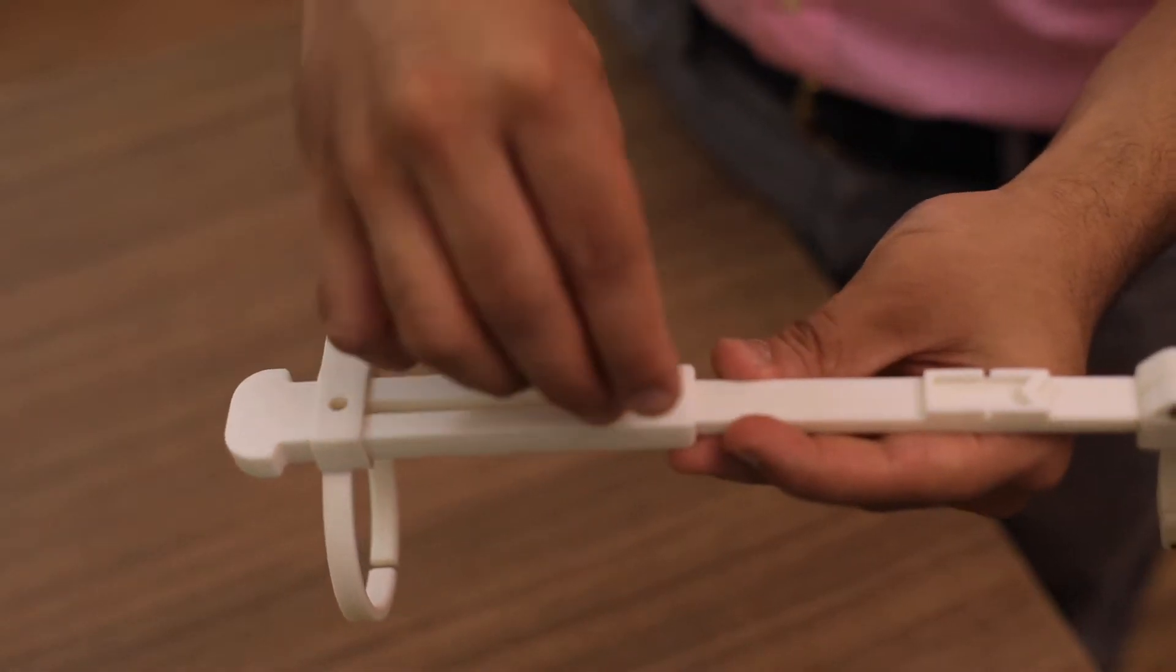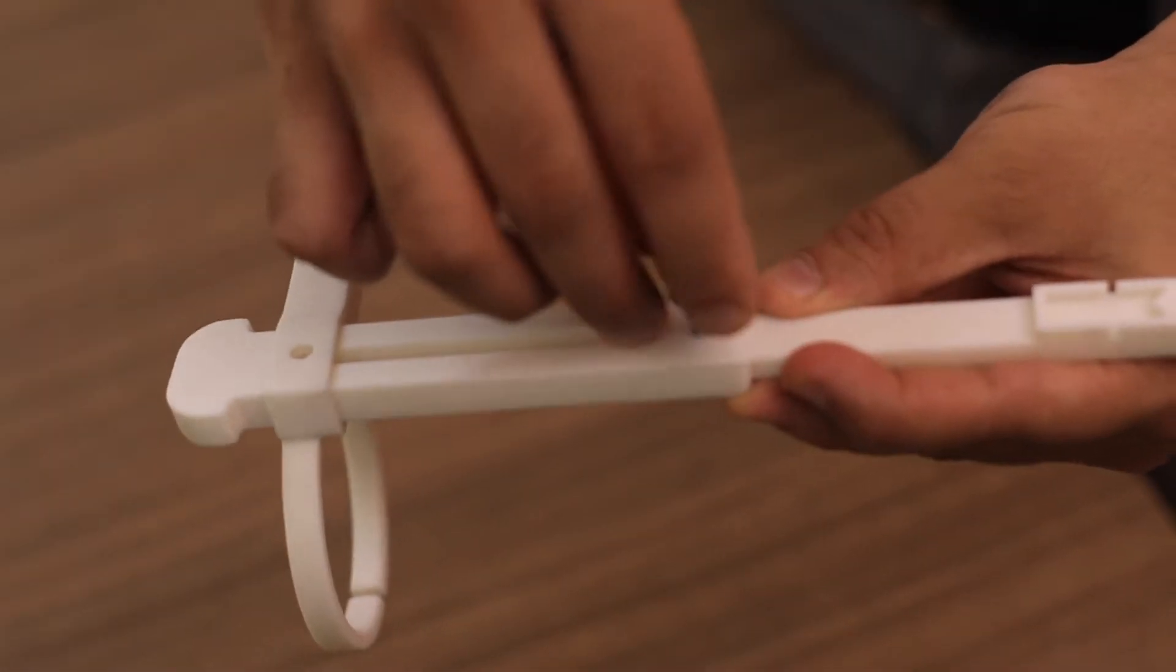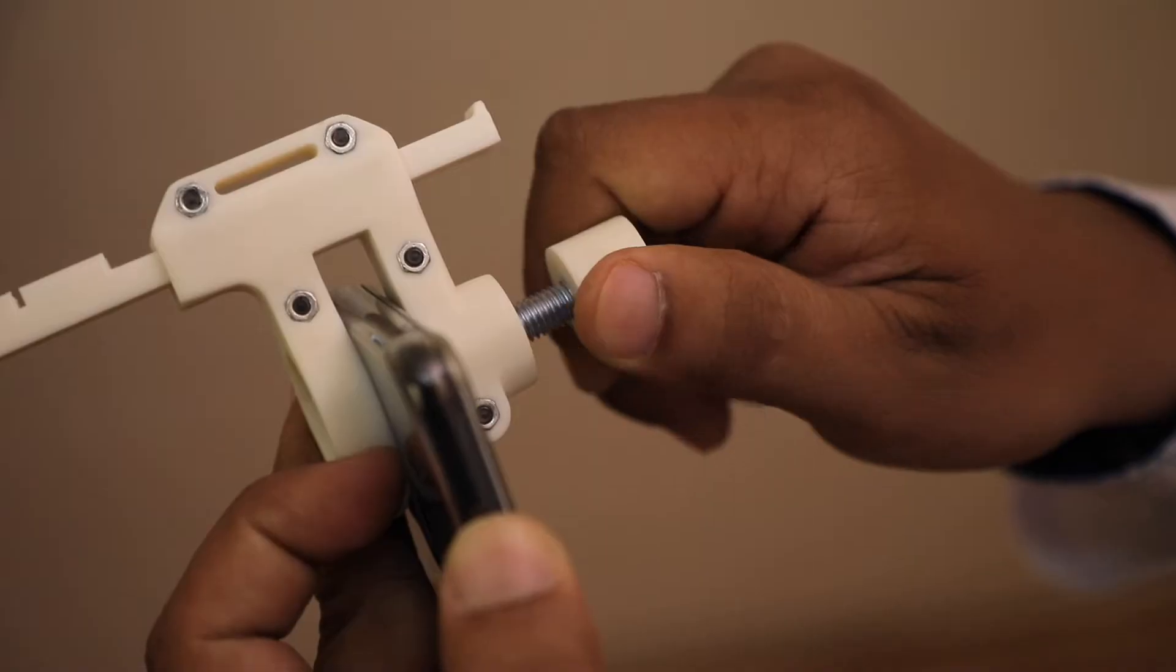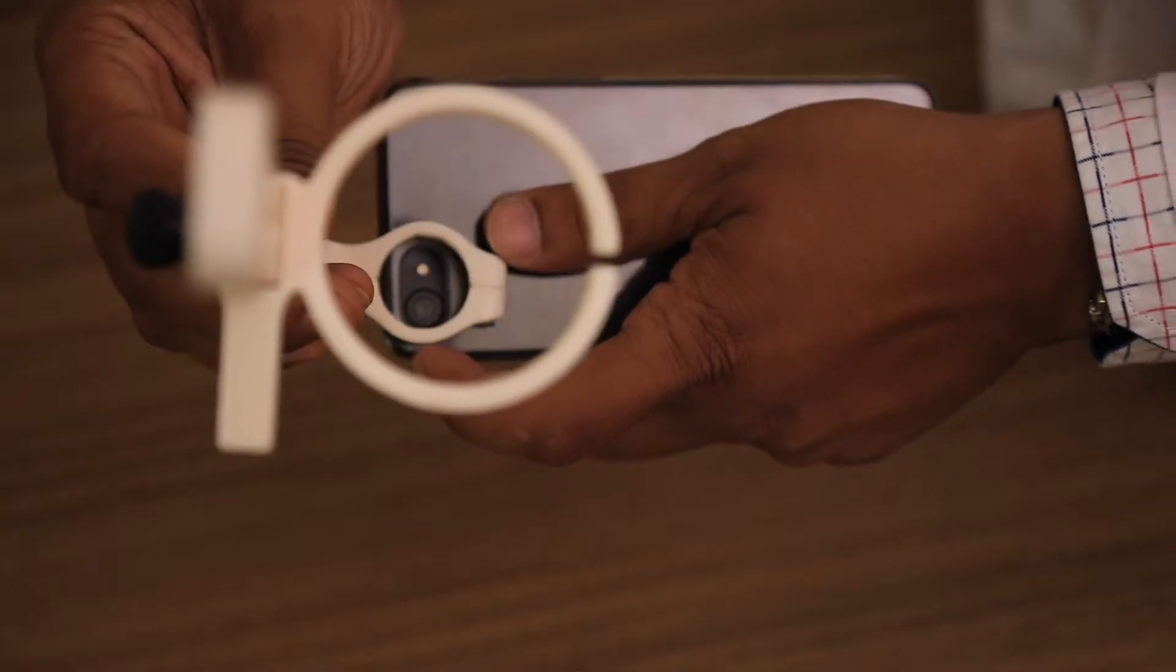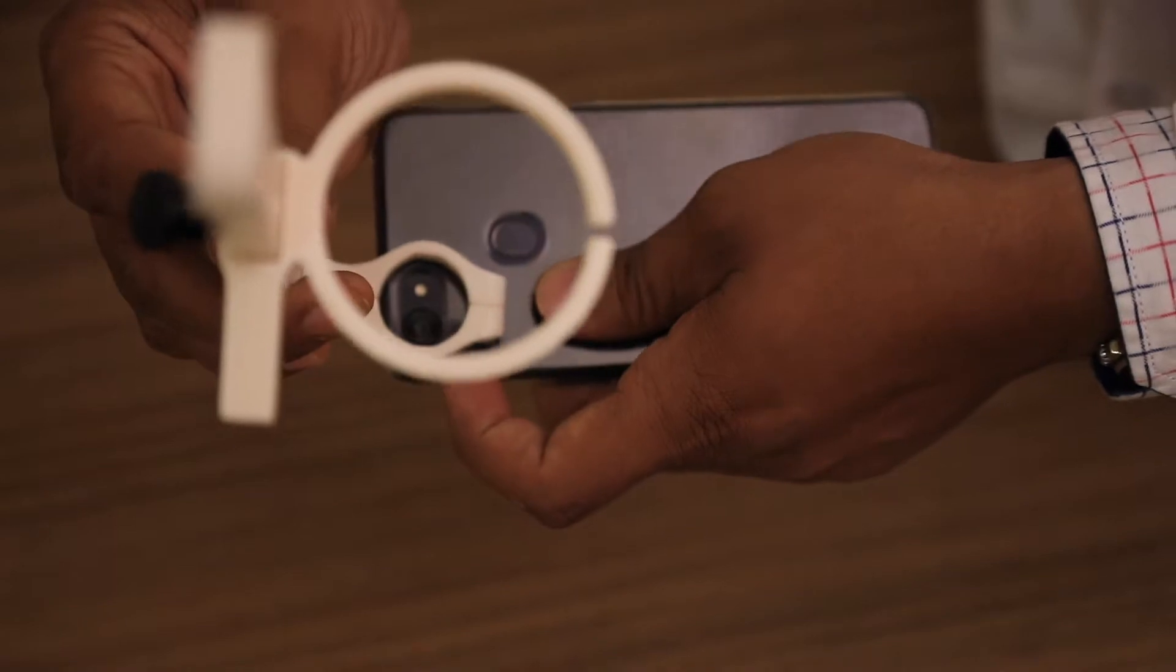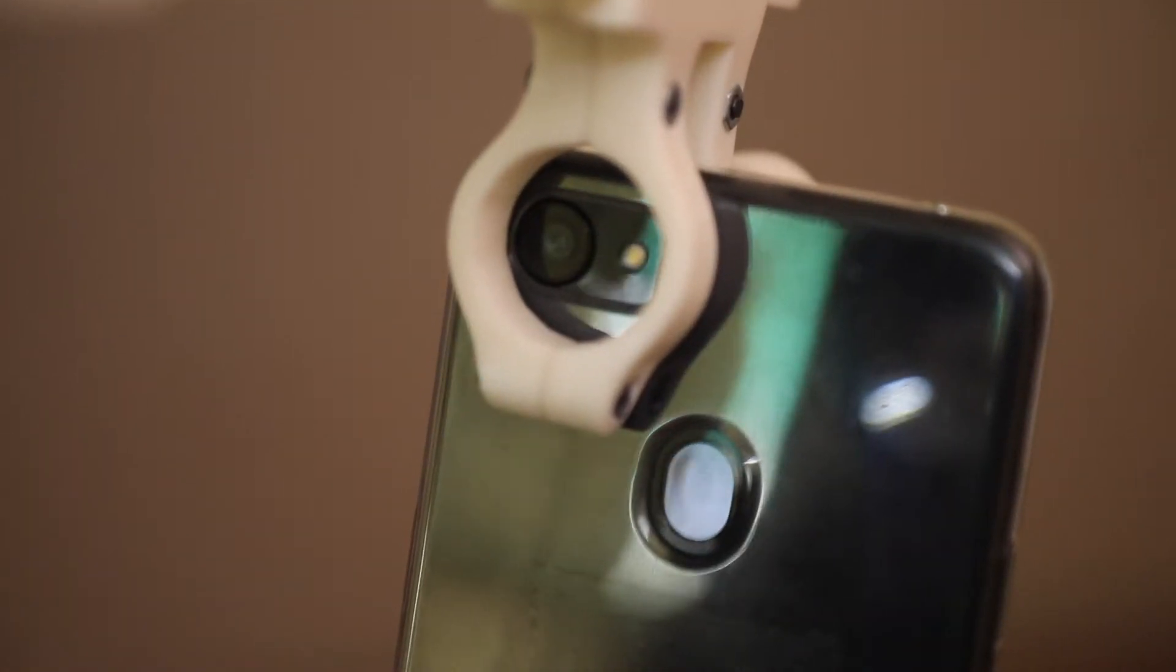Screw in the knob and it's ready to use. Connect your smartphone by tightening the screw at the end of the device. Make sure the camera and flash are within the circular area. It works with the majority of Android and iOS phones.